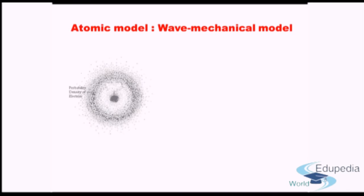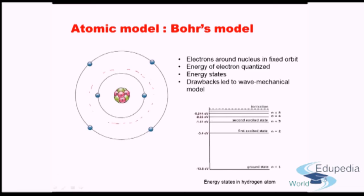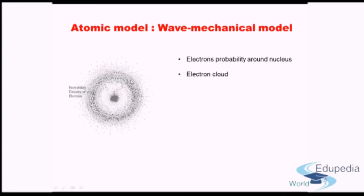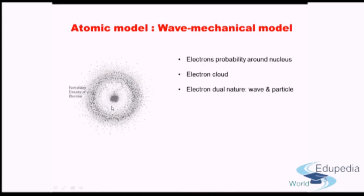The major difference between the wave mechanical model and Bohr's model is that Bohr's model defines specific orbital paths, whereas the wave mechanical model says electrons do not move in specific paths. Instead, there is a probability distribution of regions where electrons can be found — some regions have higher probability, others have lower probability, but you cannot specify a single definite orbit. This leads to what is known as an electron cloud, since you cannot specify exactly where the electron is.